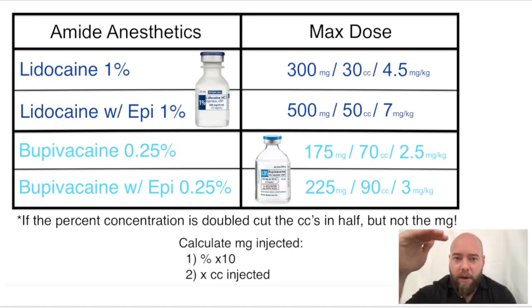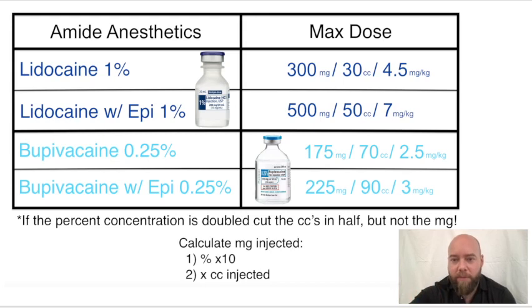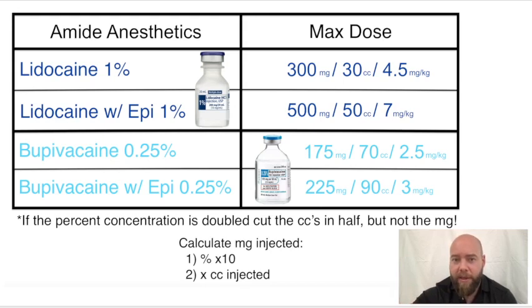Let's start. Memorize the order: lidocaine 1%, lidocaine with epi 1%, bupivacaine quarter percent, bupivacaine with epi quarter percent. The plain drugs are on the top, the ones with epi are on the bottom.